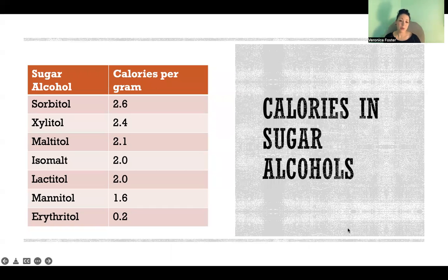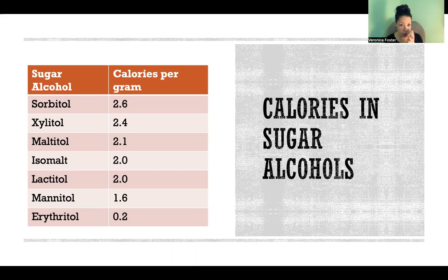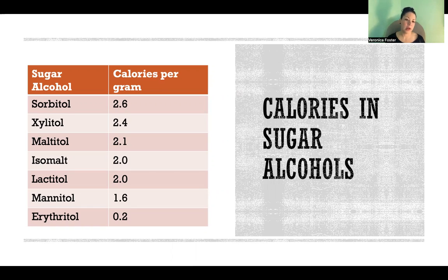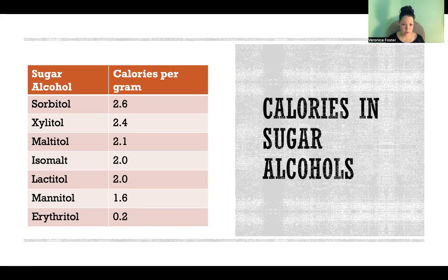This is the number of calories per gram of each of these sugar alcohols. For normal carbohydrates — sugar and any other type of carbohydrate — there are four calories per gram. As you can see, there are significantly fewer calories per gram when it comes to sugar alcohols, which is why sugar alcohols are used a lot in weight management, because it's a way to eat sweet things with fewer calories.